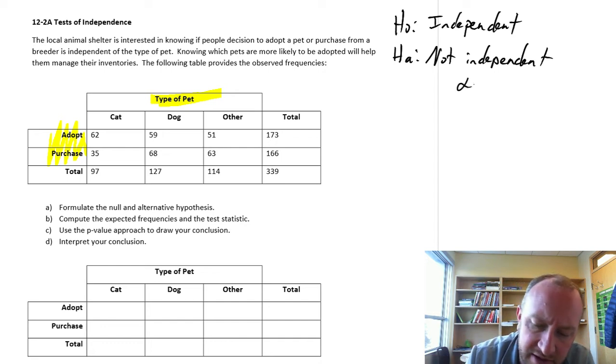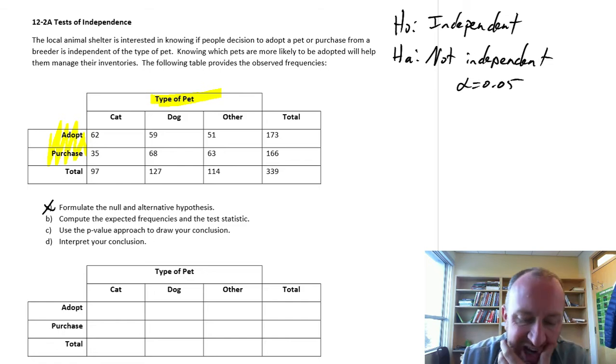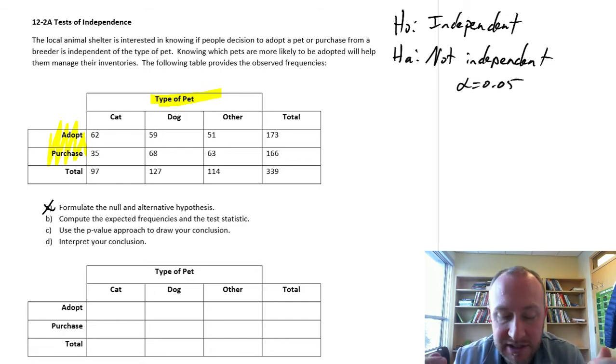State level of significance. Alpha can be 0.05. So here we've got our part A done. Compute expected frequencies and test statistics.